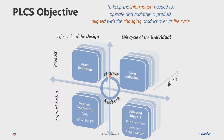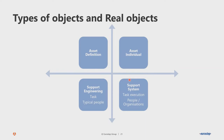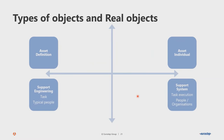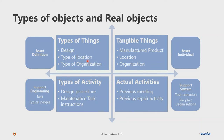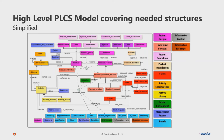It is important to support activities required for change management and feedback, enabling improvement of the design based on information from asset individuals. To summarize this view: we have the asset definition, the asset individual, the type of support system, and the executed support system. The four quadrants cover types of things, real things, types of activities, and actual activities — all integrated with traceability between them.